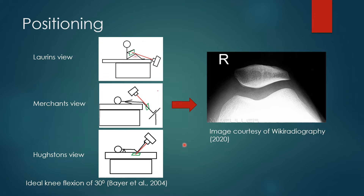All these aim to produce the image shown here. A study by Bayer et al. in 2004 suggested that the ideal knee flexion is 30 degrees, determined by assessing variations in measurements such as patellofemoral angle and other orthopedic measurements. Too little knee flexion and you may project the tibial tuberosity over the joint space too much, and there may be variations in these measurements.